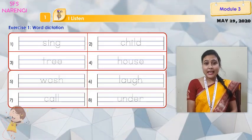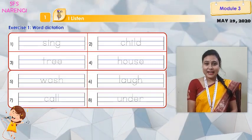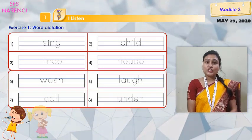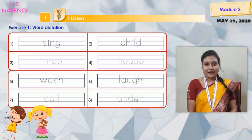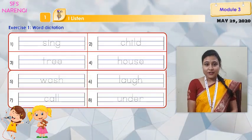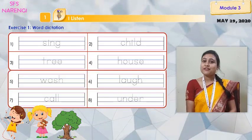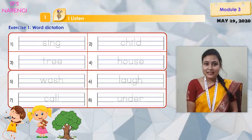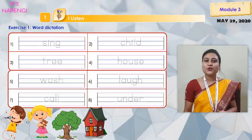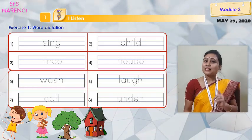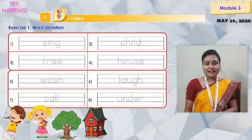The first word is 'sing' — S-I-N-G. We sing when we are happy. The second word is 'child' — C-H-I-L-D. The third word is 'tree' — T-R-E-E. I have a green green tree. The fourth word is 'house' — H-O-U-S-E. Do you remember what type of house the child was staying in? It was a small red house.